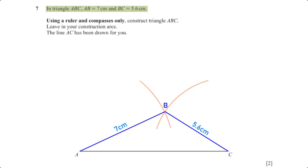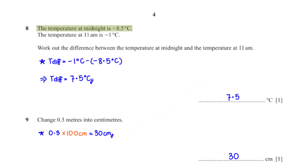In triangle ABC, AB is 7 centimetres and BC is 5.6 centimetres. Using a ruler and compasses only, construct triangle ABC leaving your construction arcs — the line AC has been drawn for you. Using a ruler we measure the width of the compass to be 7 centimetres, then stand at point A and construct an arc. Next we measure the width to be 5.6 centimetres, stand at point C and construct another arc. The intersection of the arcs is point B, and we draw two lines from A and C to B to complete the triangle.